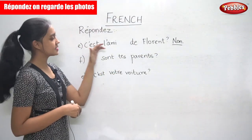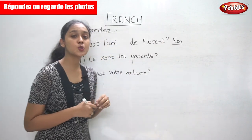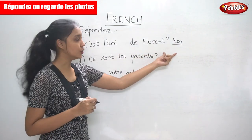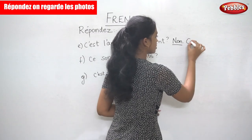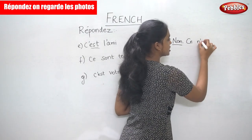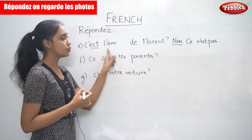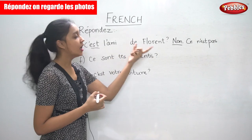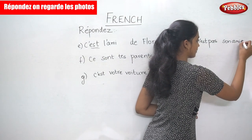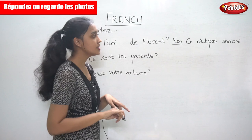The sentence is 'C'est l'ami de Florent' — is this the friend of Florent? They have given us a hint: 'Non,' so we are supposed to answer in the negative. Is it the friend of Florent? No, it is not. The verb here is 'est,' so we add 'ne' before and 'pas' after. We are going to say it is not her friend: 'Ce n'est pas son ami.' No, it is not her friend.